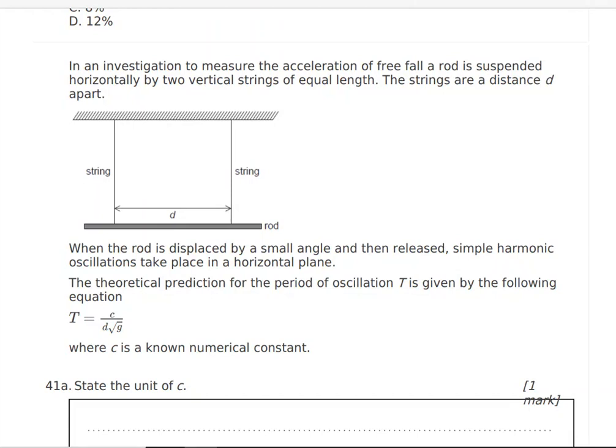Now, the question says, in an investigation to measure the acceleration of freefall, a rod is suspended horizontally by two vertical strings. So here I have two vertical strings. They have equal length and there is a rod suspended horizontally by them. The strings are a distance D apart.